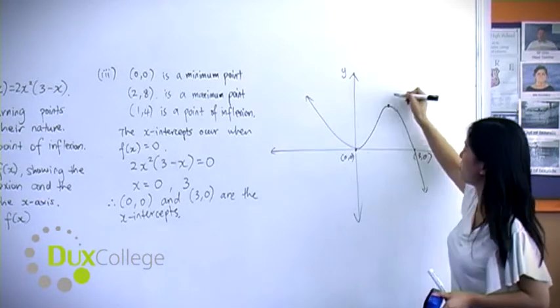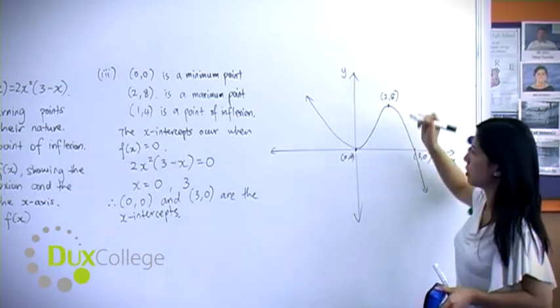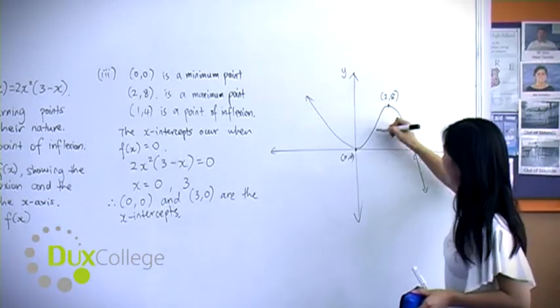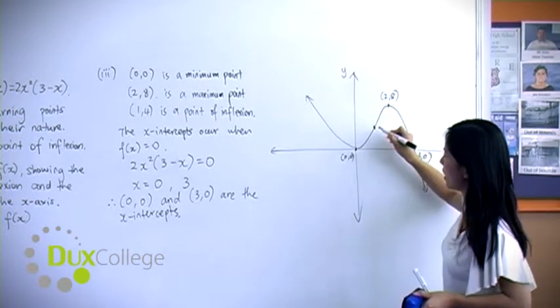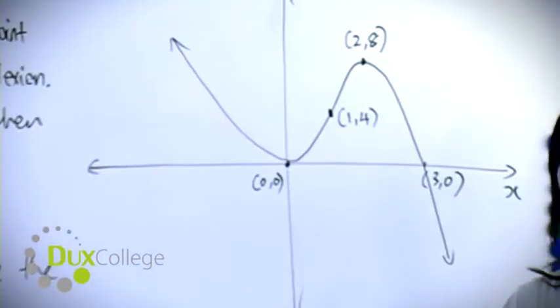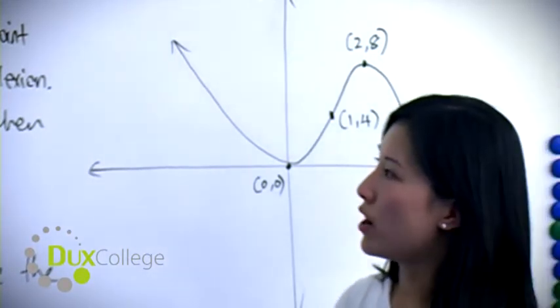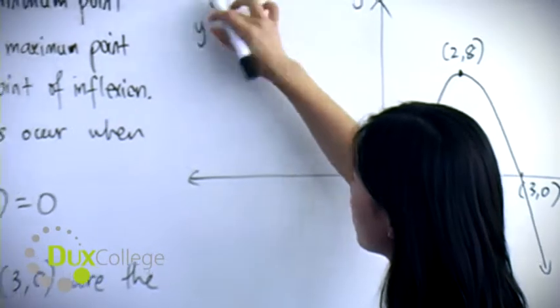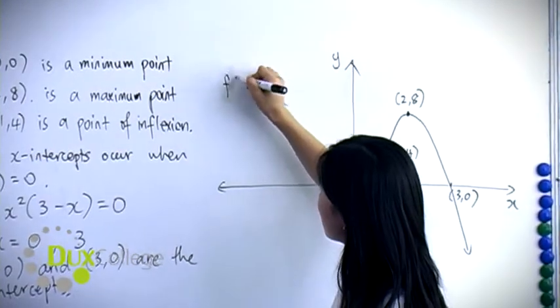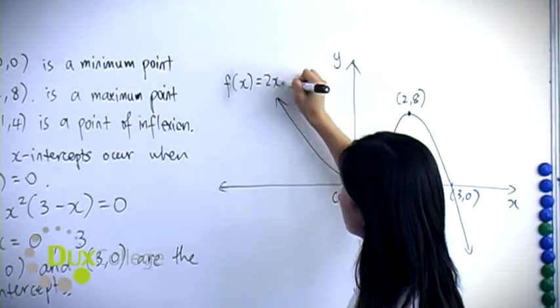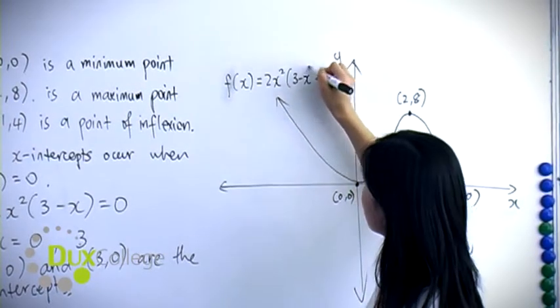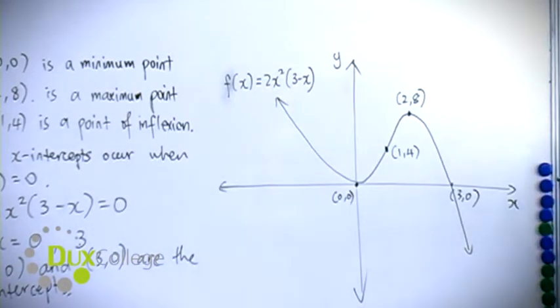And here this should be (2,8), which is the maximum point. And the point of inflection should be somewhere here, which is (1,4). Now finally, you should also write down the equation next to your diagram. And that's your complete sketch.